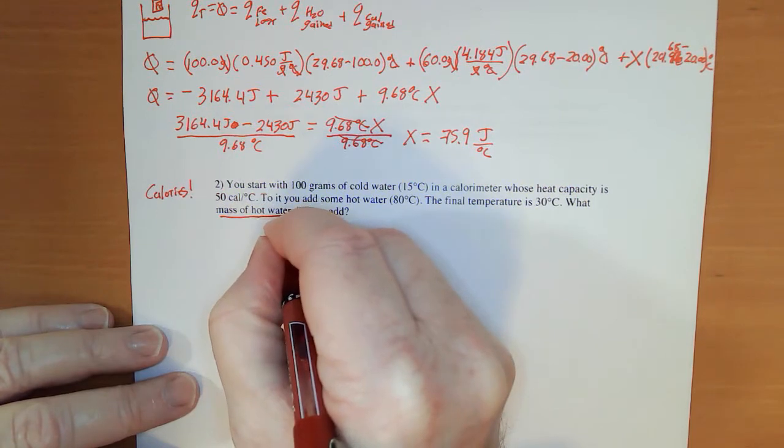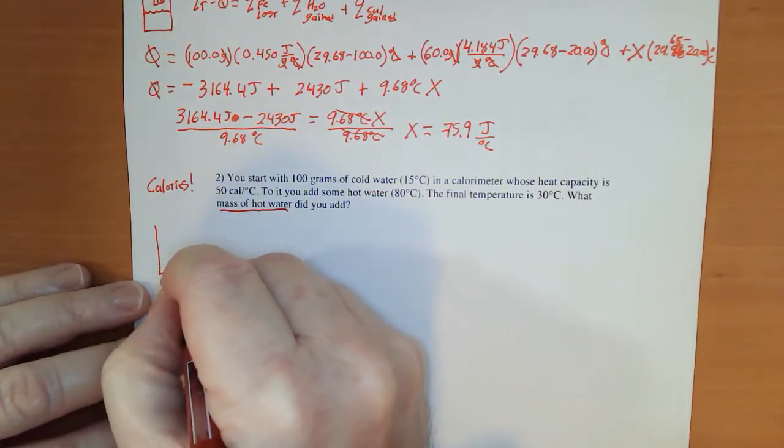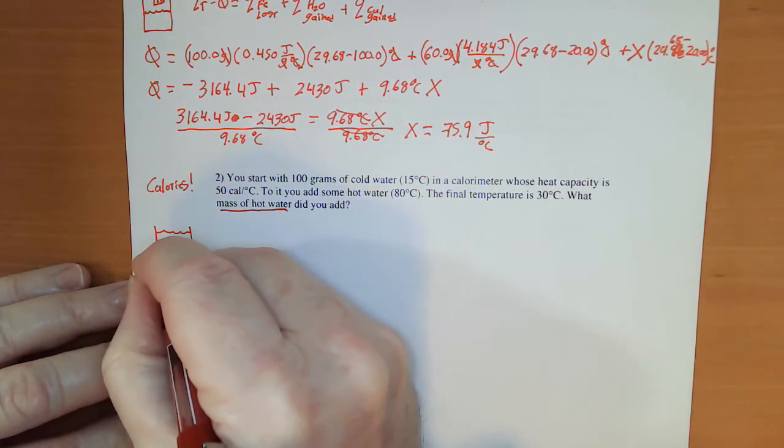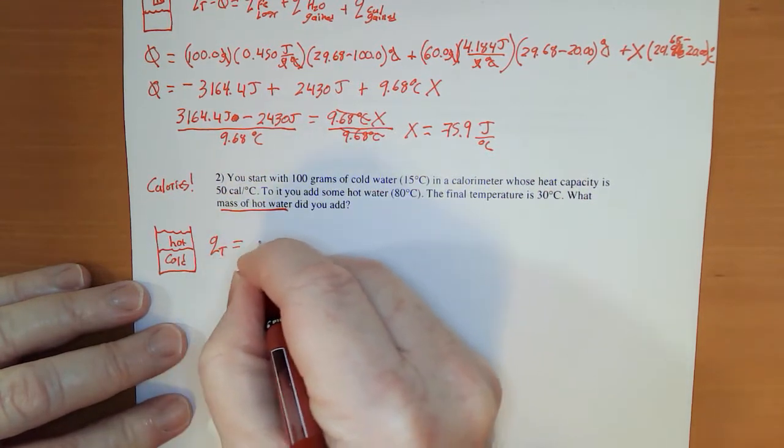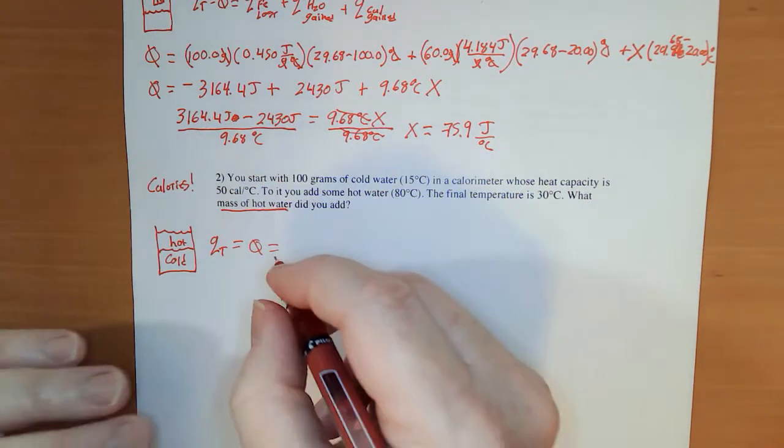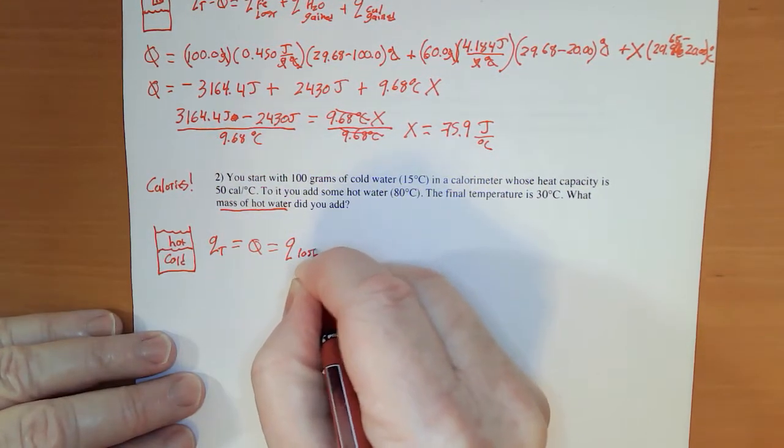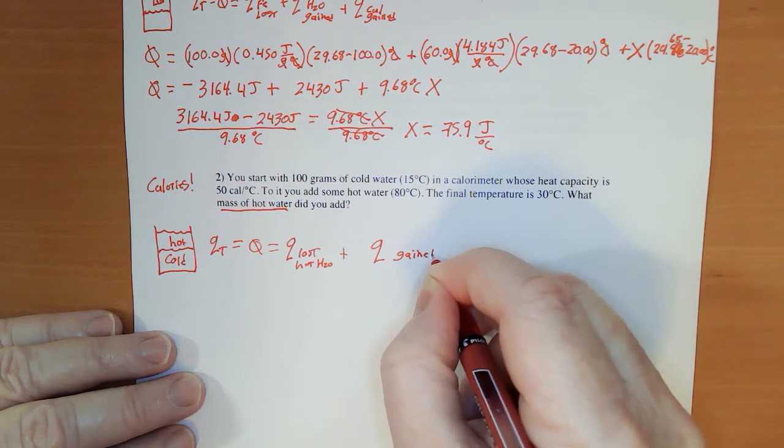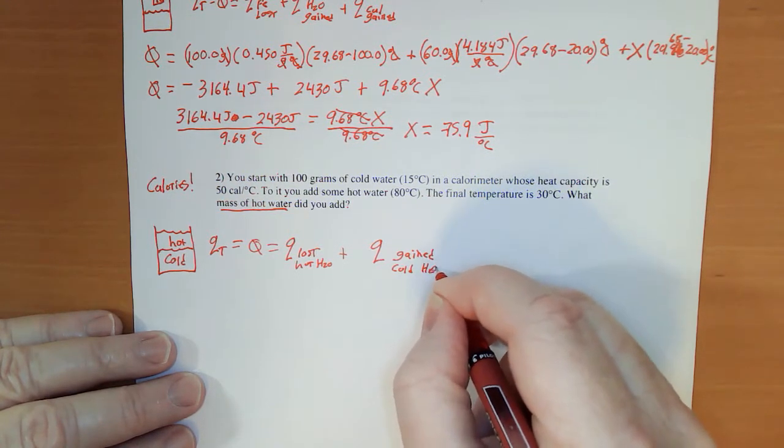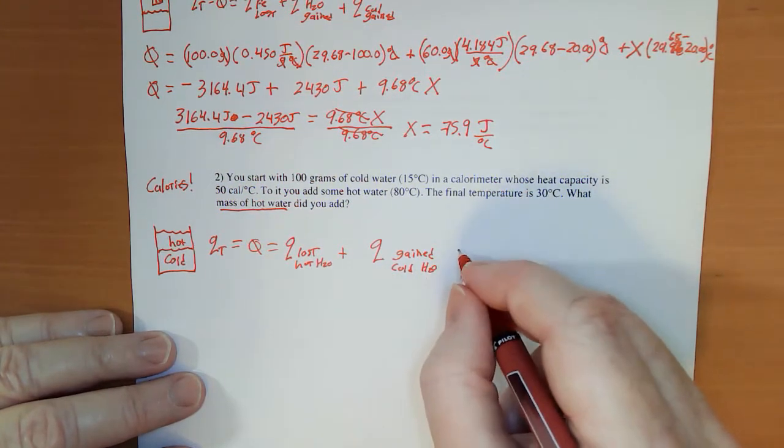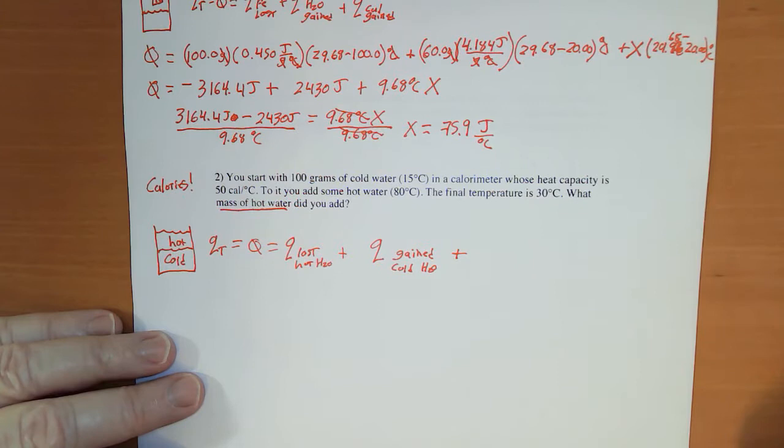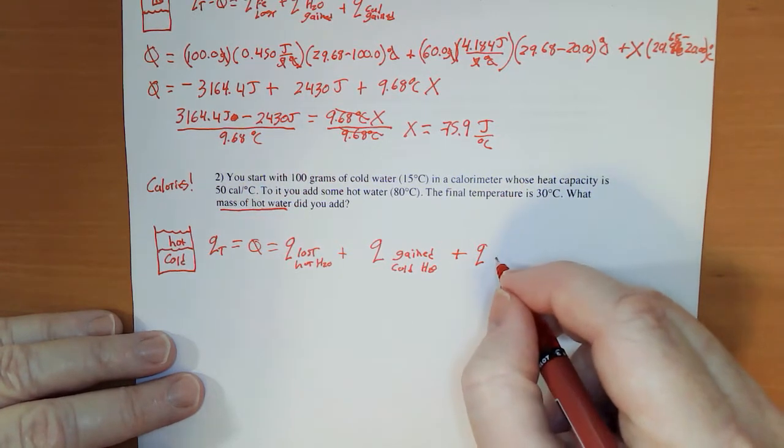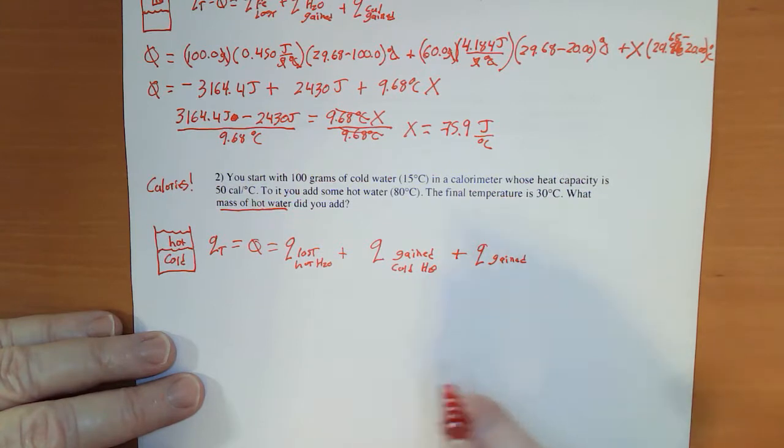We have cold water in a calorimeter and we are adding hot water. We have all the temperatures and we have the heat capacity for the calorimeter. What mass of hot water did we add? Here's my styrofoam cup with my two layers of water that mix, one that's cold, one that's hot. Q total equals zero, which equals the heat that was lost from the hot water plus the heat that was gained by the cold water. Every time I do these problems I have this flashback - my paternal grandmother lived on a street called Cold Water Canyon. And the heat gained by the calorimeter.